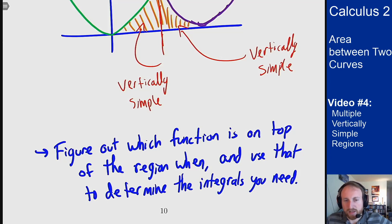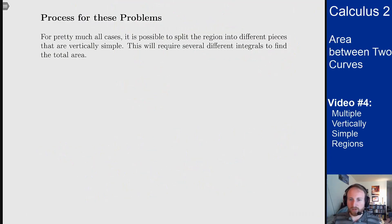Set that up first, figure out how you're going to decompose your region into multiple parts that are vertically simple, and then go through the process for each of those regions like normal, and add them up at the end. And that's sort of what I've got in this page here. For pretty much every case that you come across, it's possible to split the region into different chunks, each of which are vertically simple, and then you can put multiple integrals together to find the total area of that region.